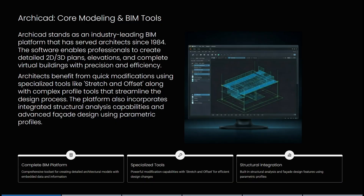So we're looking at Archicad now. Archicad stands out as an industry-leading BIM platform that has served architects since 1984. The software enables professionals to create detailed 2D and 3D plans, elevations, and complete virtual buildings with precision and efficiency. It also benefits from quick modifications using specialized tools like the Stretch and Offset, along with complex profile tools that streamline the design process.